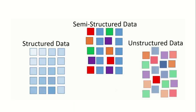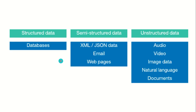Looking at the visual representation: on the far left everything is properly organized — that's structured data. In semi-structured data, some columns are organized and some are not, showing properties of both types. On the far right, everything is disorganized — that's unstructured data. Examples: structured data includes relational databases like Oracle and Excel sheets. Semi-structured data includes JSON, XML tags, emails, and web pages. Unstructured data includes audio, video, images, and natural language documents.